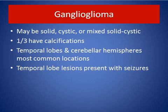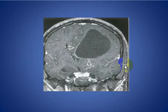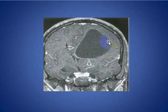Ganglioglioma: may be solid, cystic, or mixed. About one-third have calcification. Temporal lobes and cerebral hemispheres are the most common locations, and lesions often present with seizures. Here we see a coronal T1 fat-sat MRI with a ring-enhancing cystic lesion.